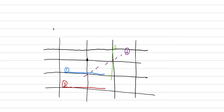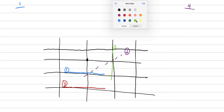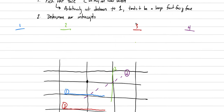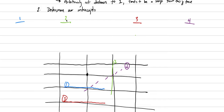We're going to do each of the steps for each one of these faces. We'll have example number four in purple, example number one in blue, example number two in green, and example number three in red. Now we can determine our intercept distances.